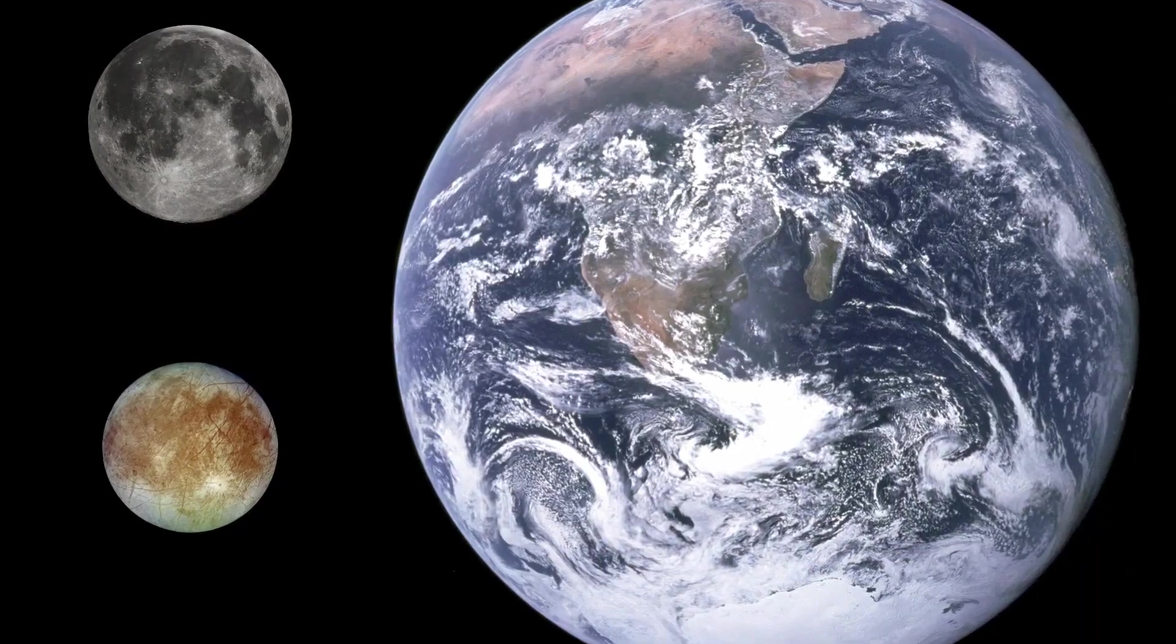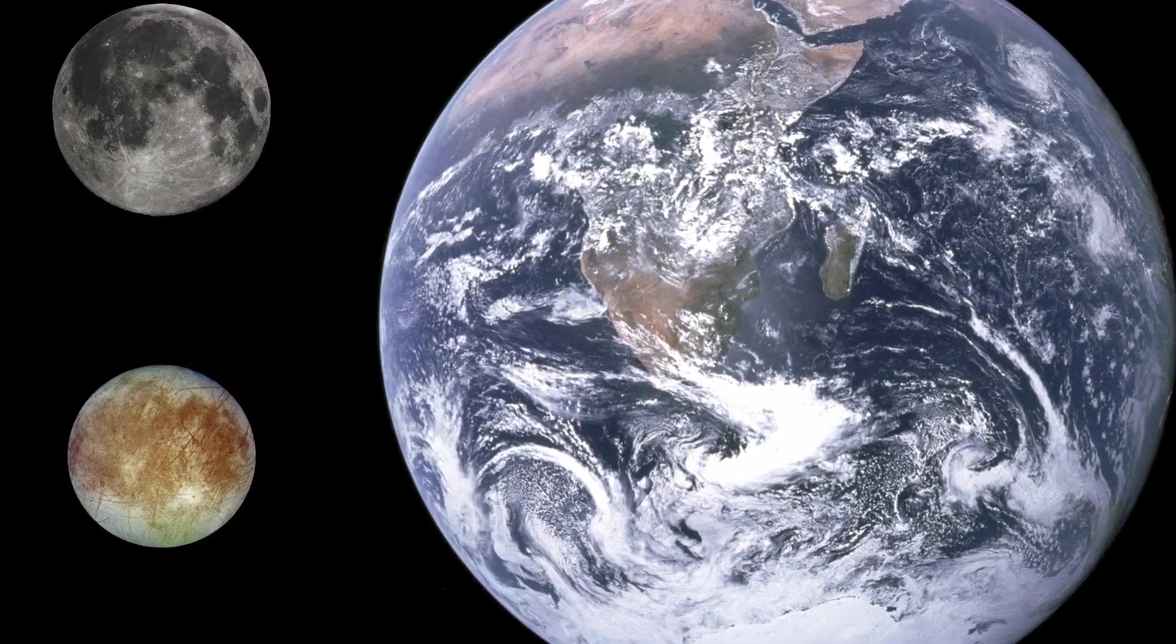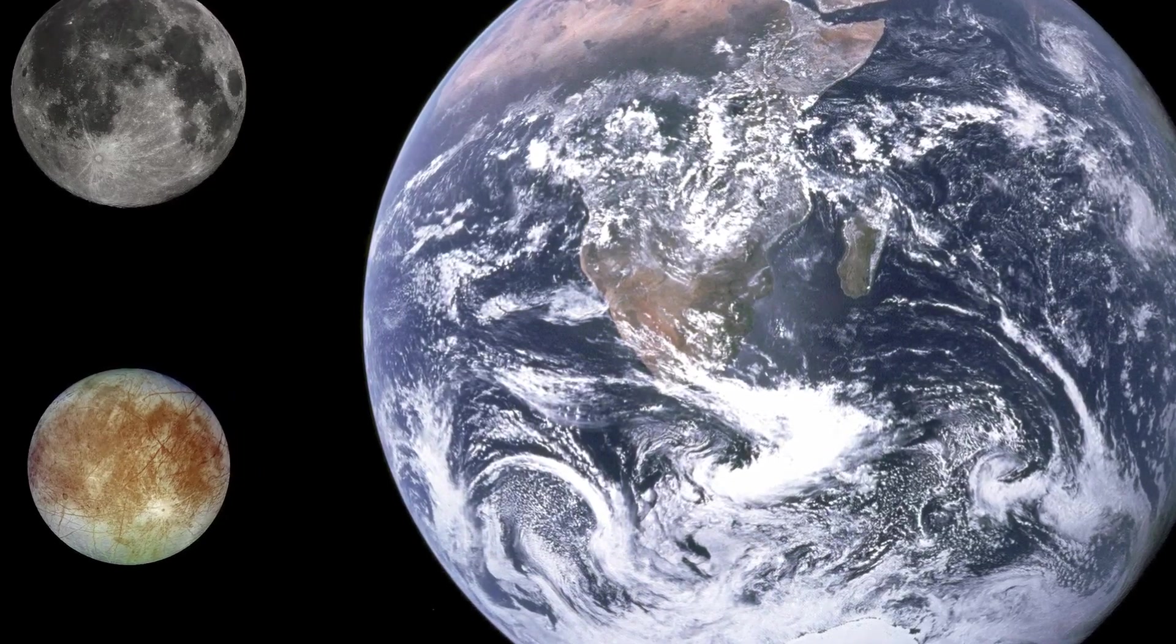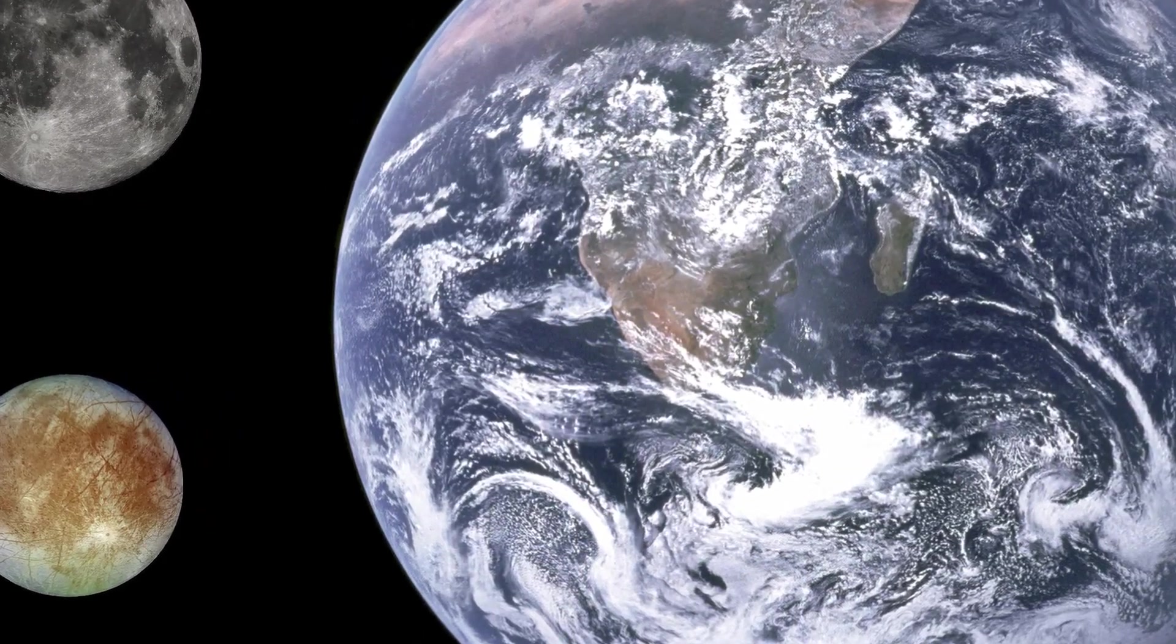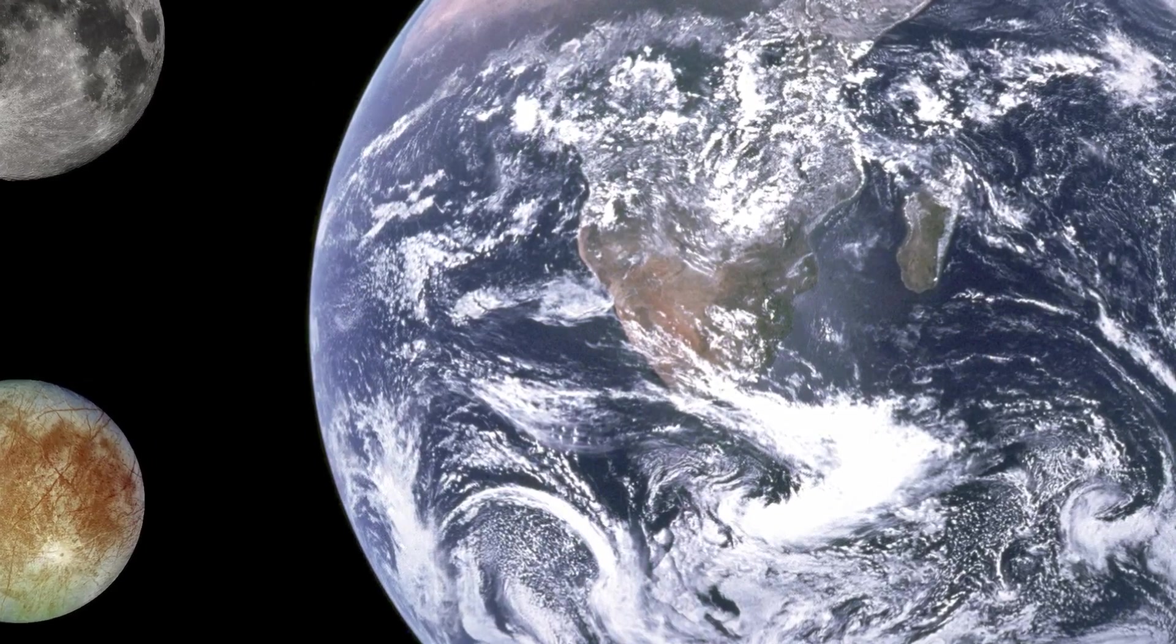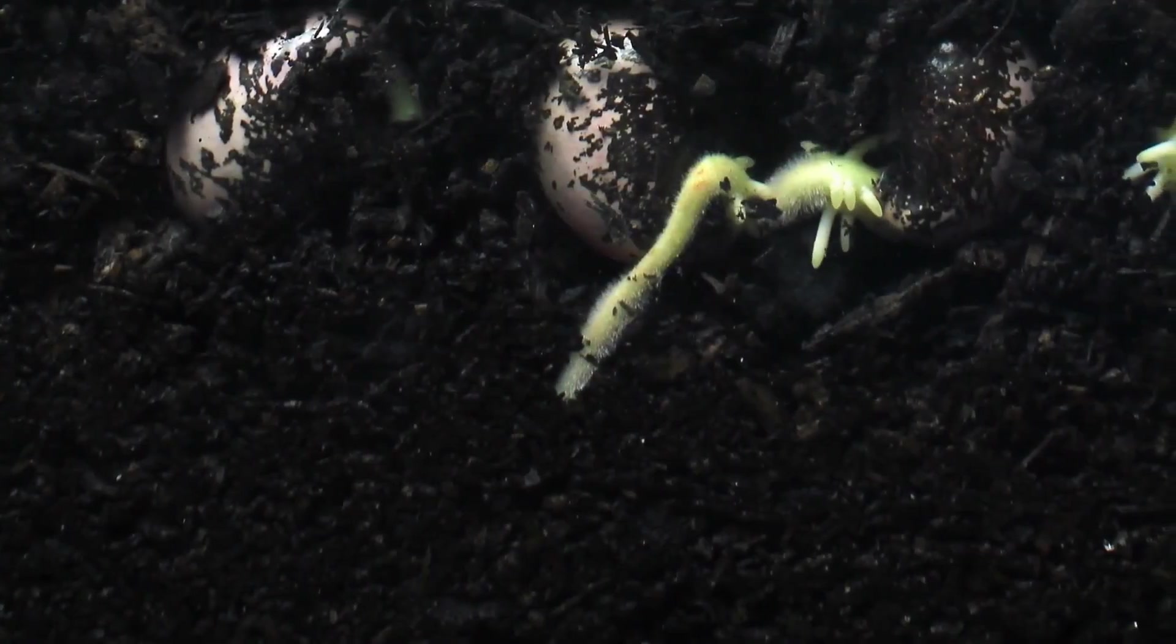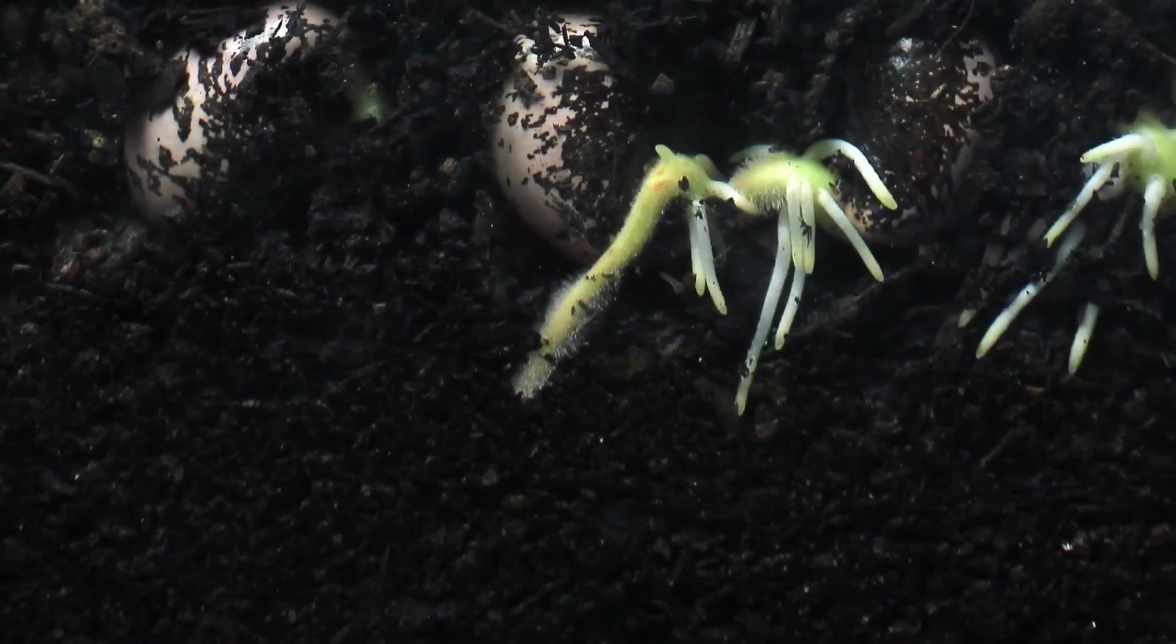In terms of its chemical ingredients, Europa is believed to be made of components similar to Earth's, such as carbon, hydrogen, nitrogen, oxygen, phosphorus, and sulfur. This ticks the third box for making life possible.